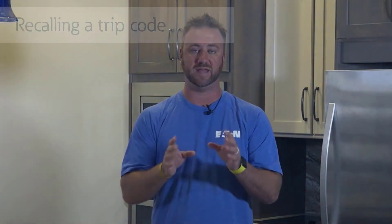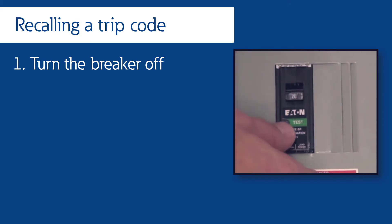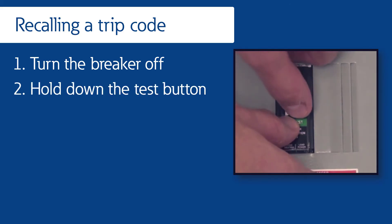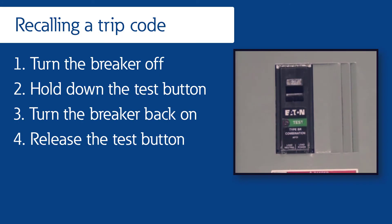With Eaton's electronic circuit breakers, you can determine the cause of the trip at a later time by following these steps: carefully turn the breaker off, hold down the test button, turn the breaker back on, then release the test button and the trip code will display again.